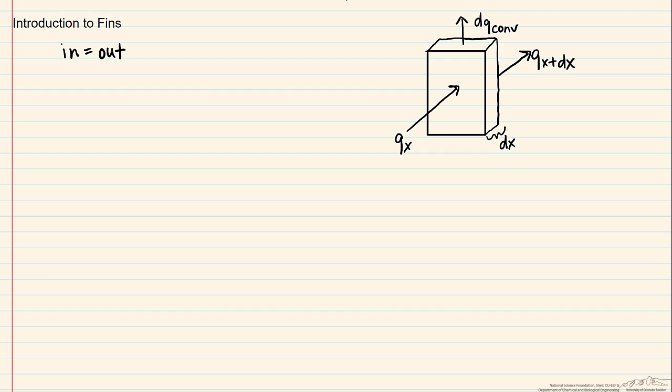So looking at this element, we find coming in we have q of x. Coming out, we have our q at x plus dx plus our dq convective.